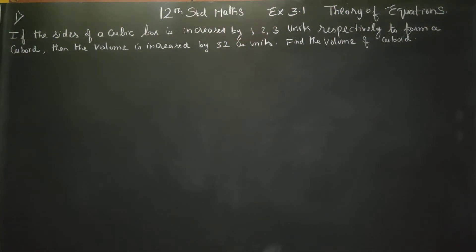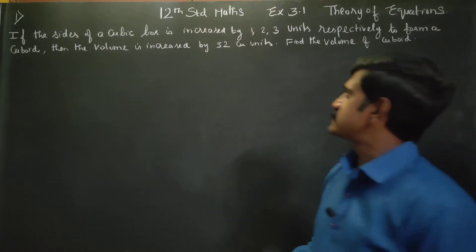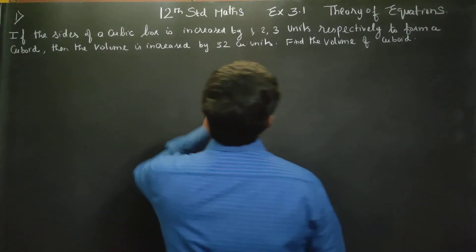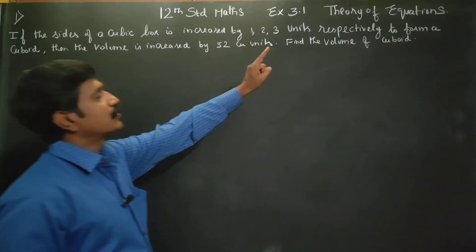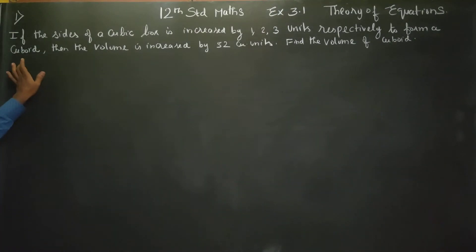Hello 12th standard students. In exercise 3.1, theory of equations: if the sides of a cubic box are increased by 1, 2, 3 units respectively to form a cuboid.